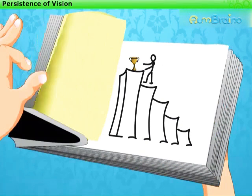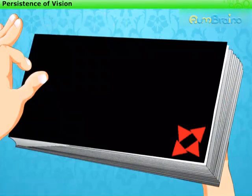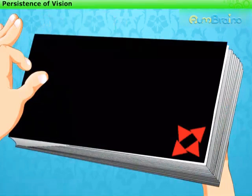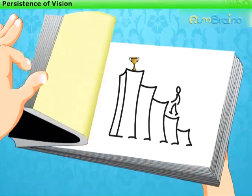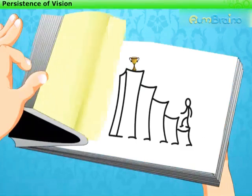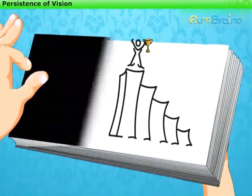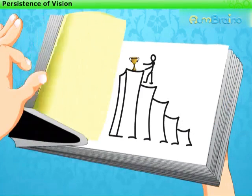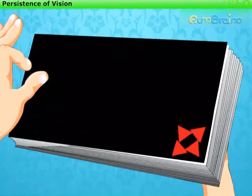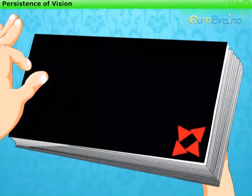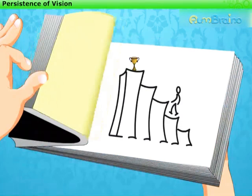Thus, if still images of a moving object are flashed on the eye at a rate faster than 16 images per second, then the eye perceives this object as moving.